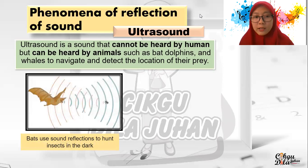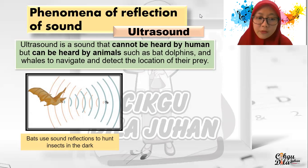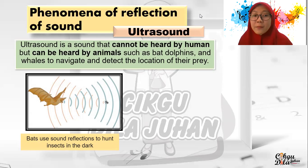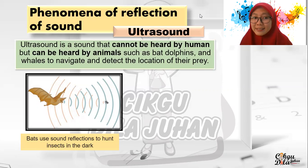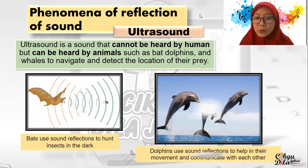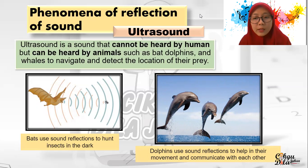For example, bats use sound reflections to hunt in the dark. That's why bats only move and hunt during the night — because bats are special, they use ultrasound. Dolphins also use sound reflections to help in their movement and to communicate with each other.